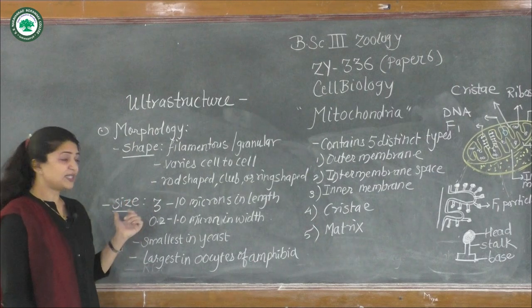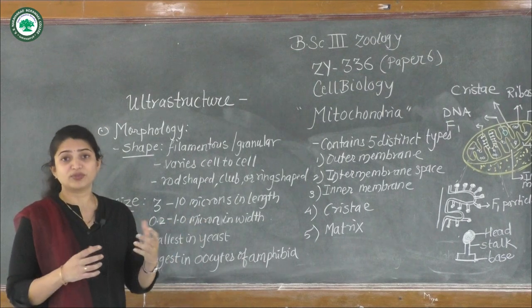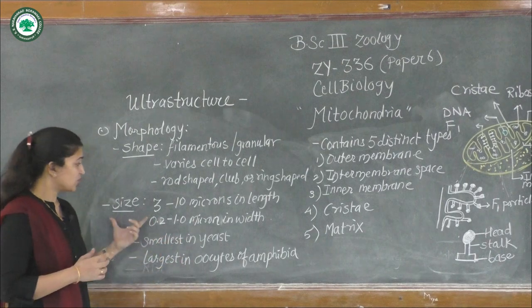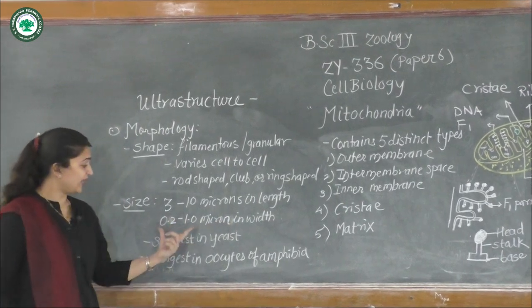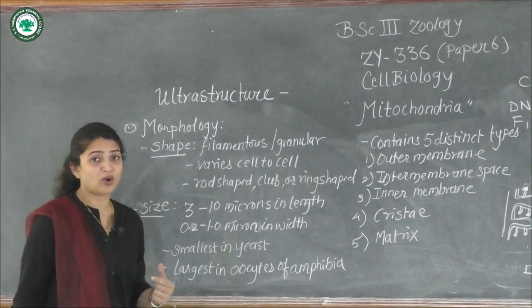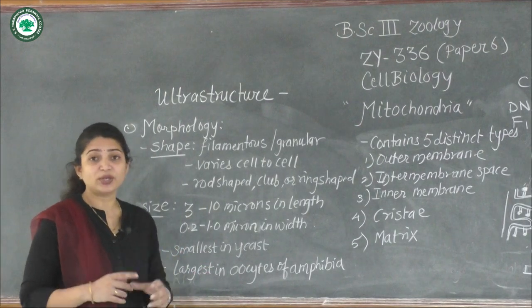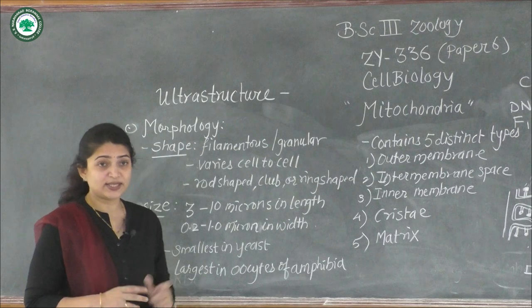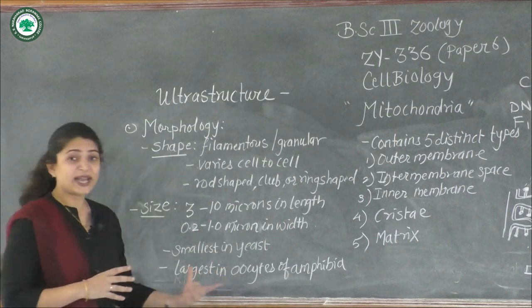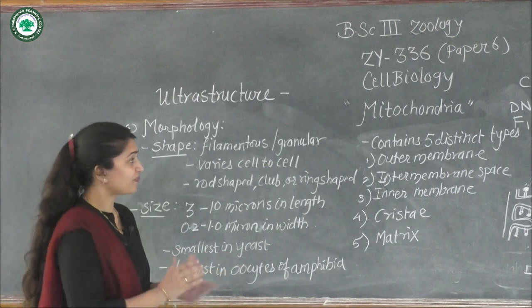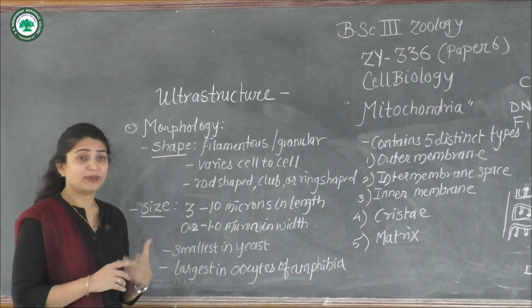Along with shape, the size also varies according to the requirements of the cell. Size may vary from 3 to 10 microns in length and 0.2 to 1.0 microns in width. The smallest mitochondrion size was observed in yeast cells, and the largest was found in the oocytes of amphibia.